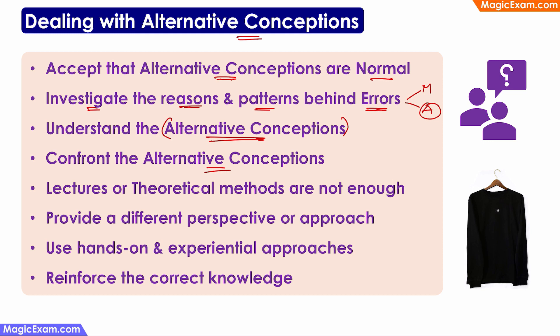After understanding them, we have to confront them — we have to give an alternative perspective, showing children why their alternative conception is wrong and that there is a better scientific explanation. Lectures and theoretical methods are not enough because such alternative conceptions are very deeply embedded in a person's mind. You cannot confront or correct them using just lectures or theoretical methods, so you have to use a hands-on and experiential approach.